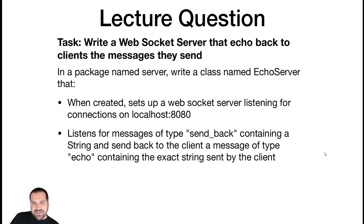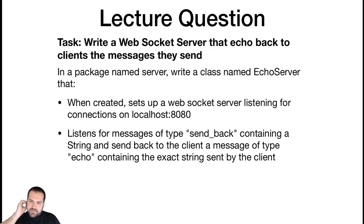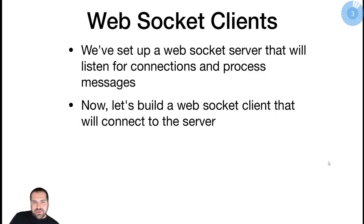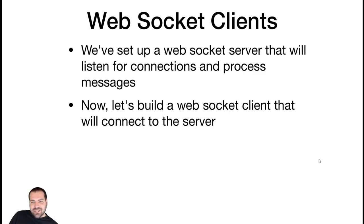Build an echo server — a WebSocket server that's going to listen for connections on localhost 8080. When it receives a message of type 'sendback' with some string, it's going to echo that string back to the sender with a message of type 'echo' containing the same contents. So we're interacting with the client — that's the one thing we didn't have in Monday's lecture question: actually sending information back to the client. Let's see how to build some clients to actually interact with our servers, because just building servers isn't very interesting unless you have clients connecting to them.